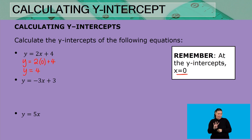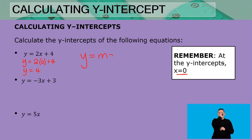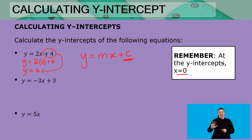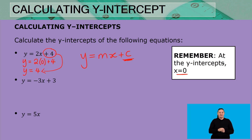Remember from our standard form y = mx + c — which value tells us the y-intercept? Yes, it is the value of c. The value of c is the y-intercept, and as you can see it is the same value we calculated.